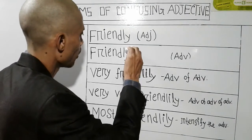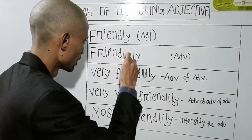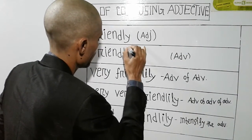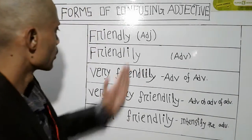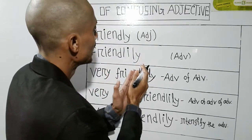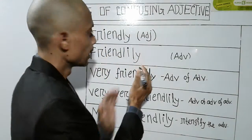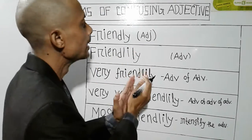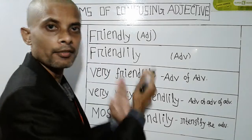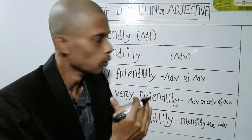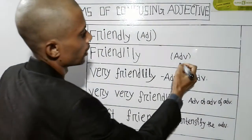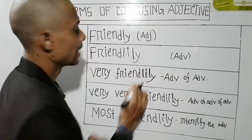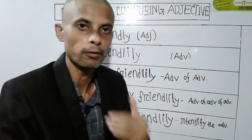Which means that if you add -ly, how do you change it? Friendly — let's see. Friendly is the adjective. My adverb class — this is the word class. This is the word adverb. We have already said adverb. Friendlyly.